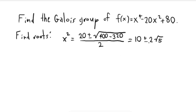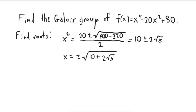These are the two possible values for x squared, and both are non-negative numbers. So the possible values for x are plus or minus the square root of 10 plus or minus 2 square root of 5. This is actually all four of the roots of this polynomial.